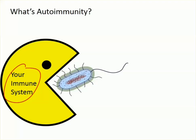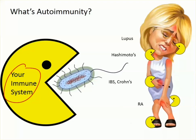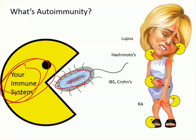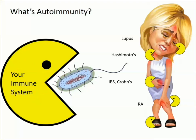What happens in an autoimmune condition is that your immune system becomes really confused. The bug would be foreign, but instead of recognizing just bugs as foreign, your immune system recognizes your own tissues as foreign. This is really critical — your immune system is confused.